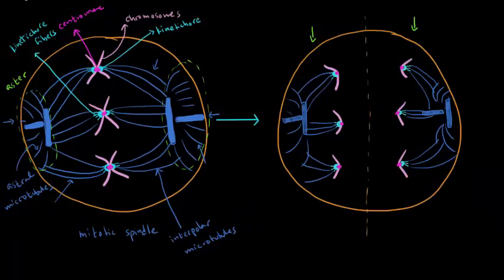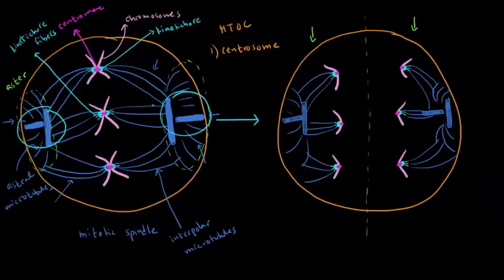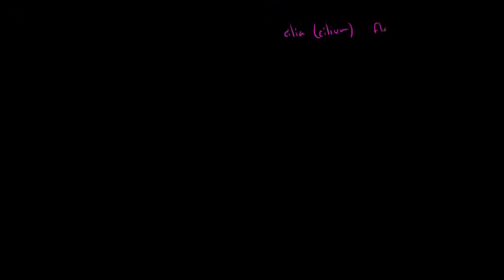To recap: there are two different types of microtubule organizing centers. The first is the centrosome — composed of the centrioles plus other proteins. The second type of microtubule organizing center is called a basal body. Basal bodies are the microtubule organizing center in cells that have either cilia (singular: cilium) or flagella (singular: flagellum).